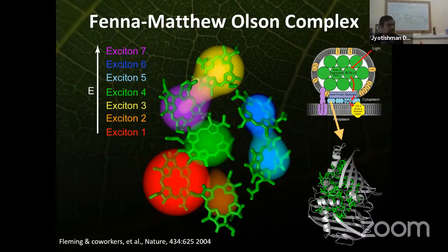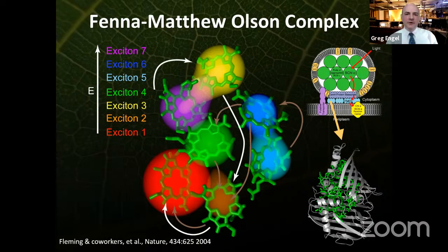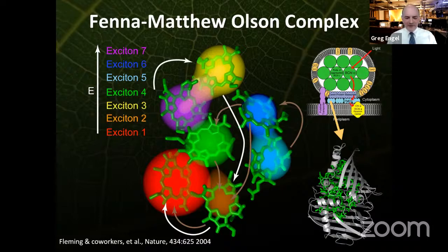The base plate is an interesting component. Greg overlays on the FMO structure some arrows derived by Tobias Brixner with Graham Fleming in their 2004-2005 Nature paper, to give a sense of how the energy flows. There are a couple of different pathways — the white and brown ones identified at that time — but all the energy flows to that lowest energy exciton before going to the reaction center.